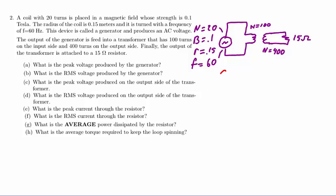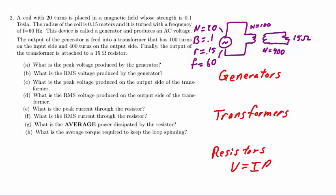In order to understand the solution of this problem we're going to have to learn about generators, transformers, and resistors. The last of these, the resistor, I'm going to assume we're familiar with and so we understand that V equals IR for any resistor.